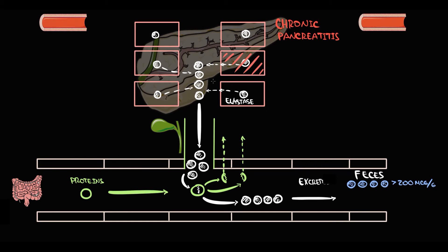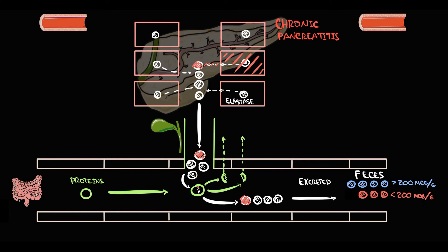In chronic pancreatitis — where acute pancreatitis is repeated multiple times — pancreatic cells progressively die and dead acinar cells are replaced by connective tissue. This connective tissue is non-functional and cannot secrete enzymes. As the amount of acinar cells decreases, elastase secretion decreases, protein digestion decreases, and the concentration of elastase in the feces decreases. An amount of elastase less than 200 micrograms per gram is considered a marker of moderate to mild exocrine pancreatic insufficiency.